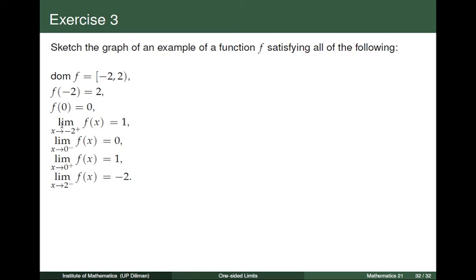Moreover, the limit of the function as x approaches negative 2 from the right side is equal to 1. The limit of the function as x approaches 0 from the left side is 0. The limit of the function as x tends to 0 from the right side is equal to 1. And finally, the limit of the function as x tends to 2 from the left side is equal to negative 2.